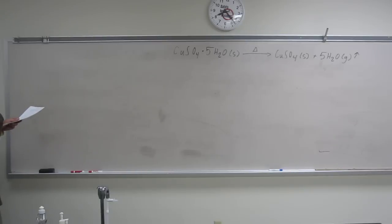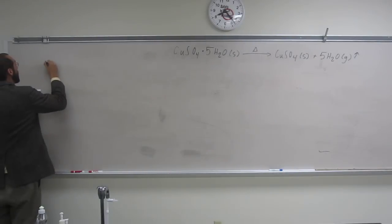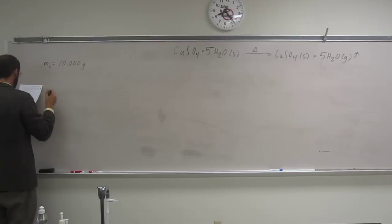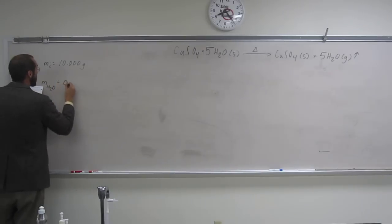Okay, so the initial mass of the ore is 10 grams. And it gives us the mass of water. So the mass of water that it loses is 0.5728 grams.